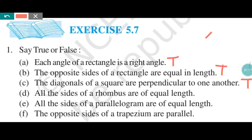Part D: all sides of a rhombus are of equal length. This is also true. For a square or rhombus, all four sides are equal. Now part E.